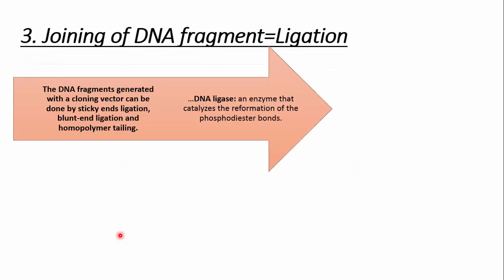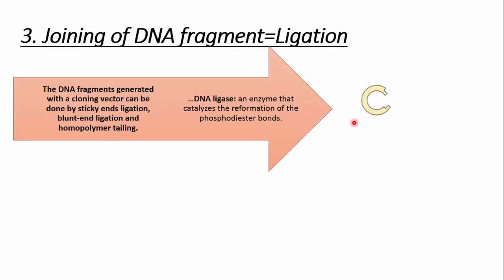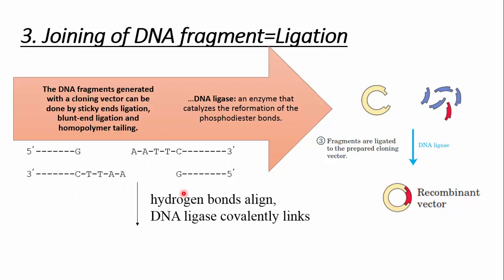Next, we join our restricted DNA and genes of interest using DNA ligase enzyme. The restricted vector and our desired gene of interest are joined together by DNA ligase to form a recombinant vector. DNA ligase forms hydrogen bonds between the two DNA molecules to produce recombinant DNA.